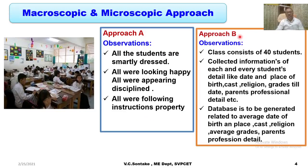In approach B, the same observer comes and takes the following observations. First, he noted that the class consists of 40 students. He collected information on each and every student — details like date and place of birth, caste, religion, grades to date, and parents' professional details. Based upon these observations, he wants to prepare a database related to average date of birth and place, caste, religion, average grades, and parents' professional details.